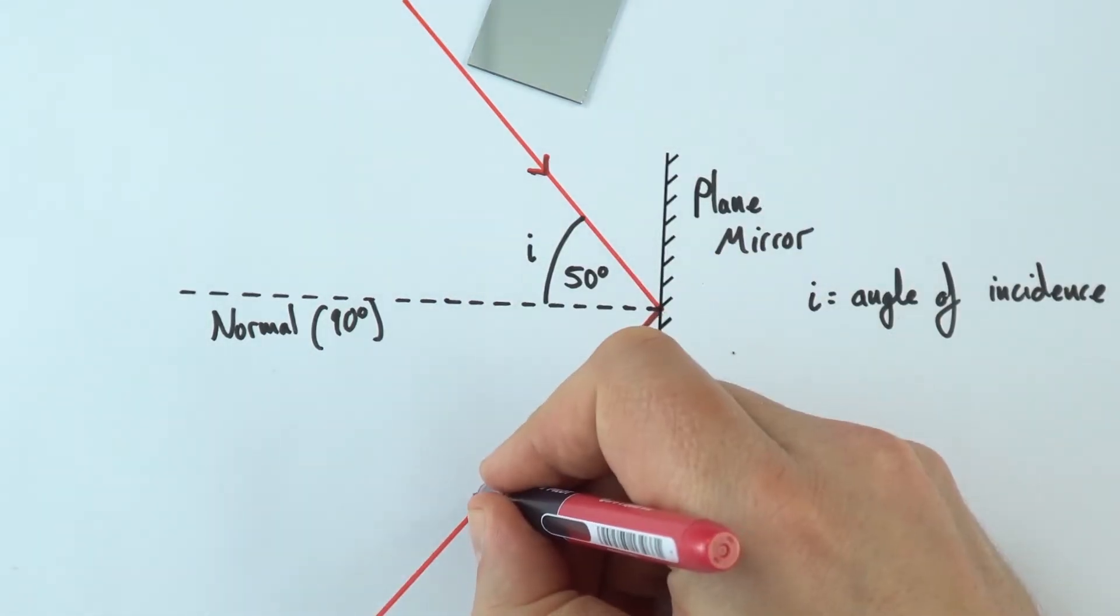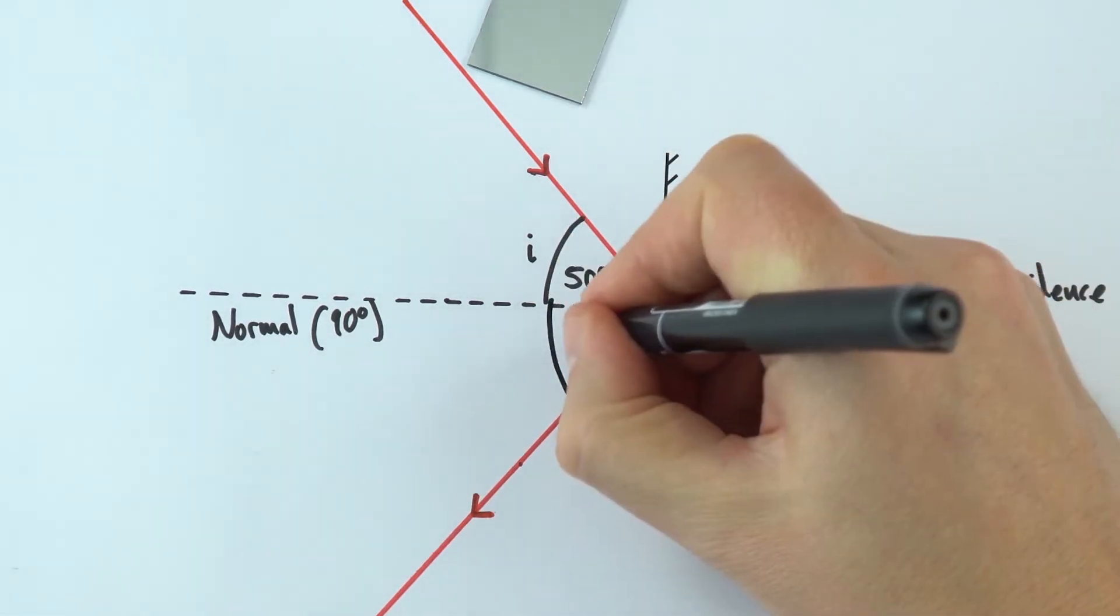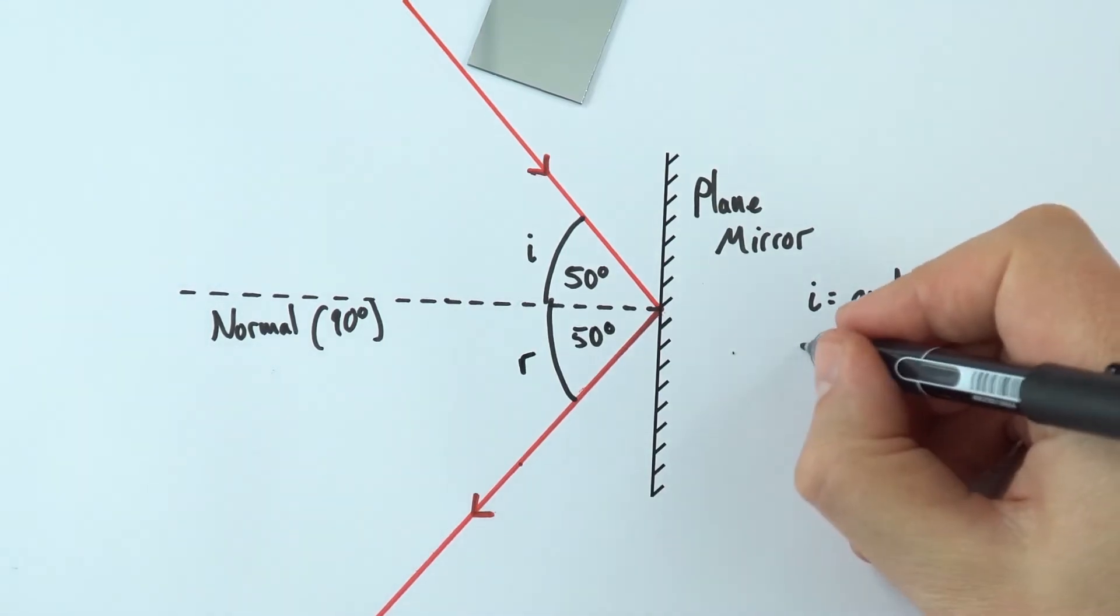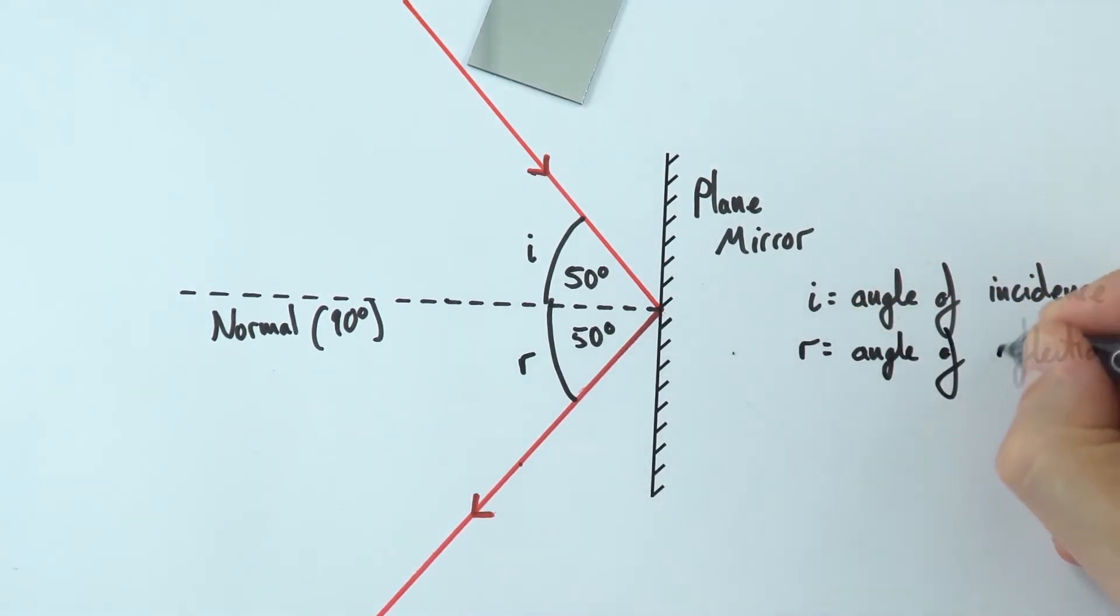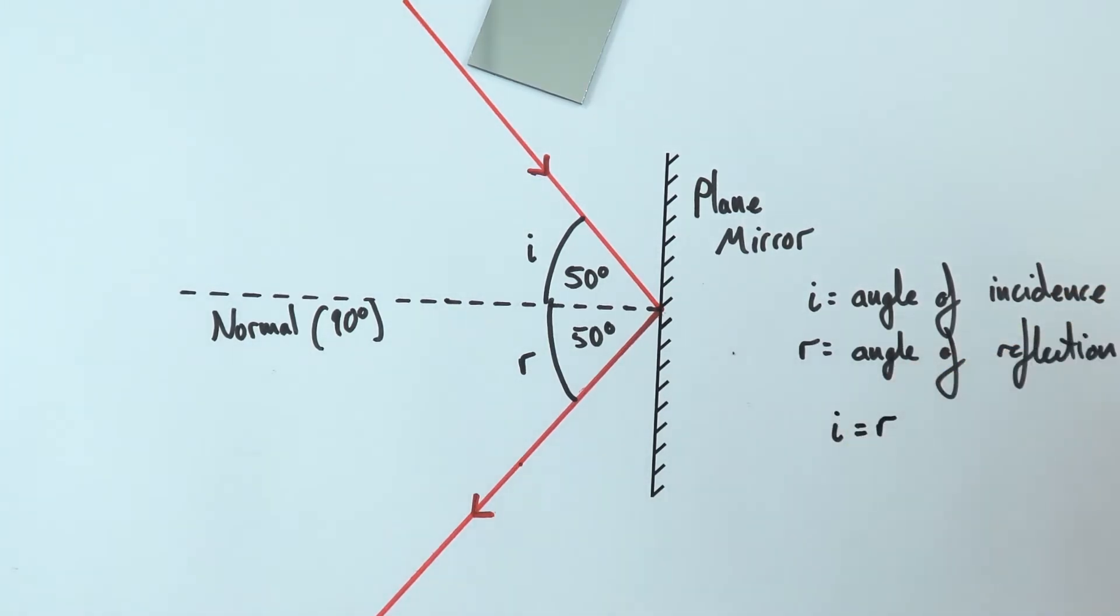Again, I'm going to put an arrow to show the direction that ray of light is traveling, and this angle here is also equal to 50 degrees. I'm going to call that little r, and we can say that r is equal to our angle of reflection. For reflection, what we find is that i is equal to r.